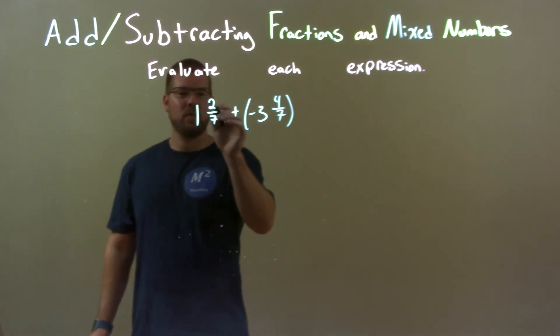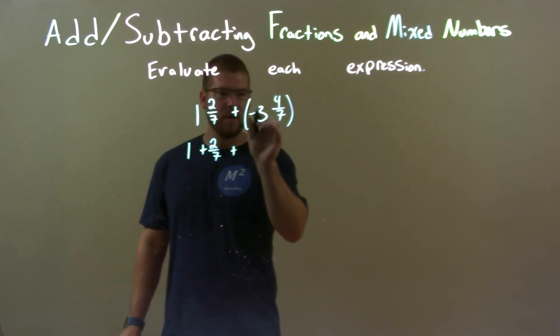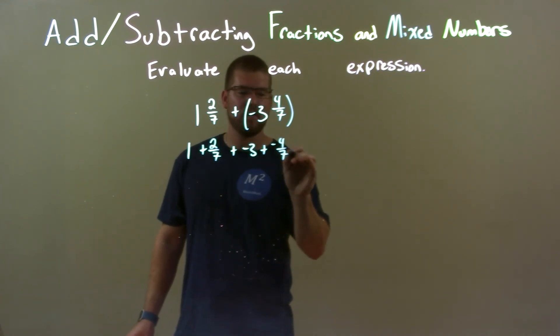So, to do that I take the 1 and 2 sevenths, make it 1 plus 2 sevenths. Then, plus a negative 3 plus, make sure we bring the negative, negative 4 sevenths.